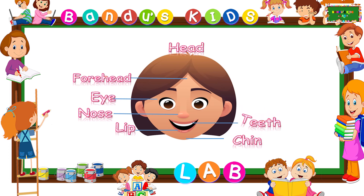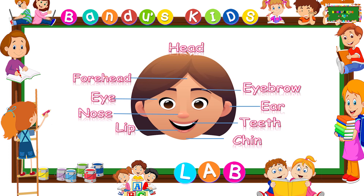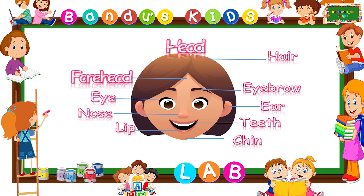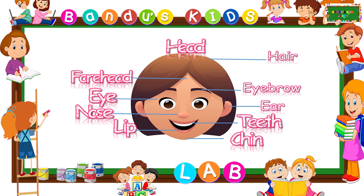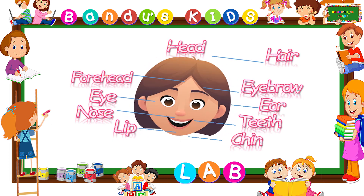Teeth — T-E-E-T-H. Teeth. Ear — E-A-R. Ear. Eyebrow — E-Y-E-B-R-O-W. Eyebrow. Hair — H-A-I-R. Hair. Head, forehead, eye, nose, lip, chin, teeth, ear, eyebrow, hair. Let's learn the parts of face.